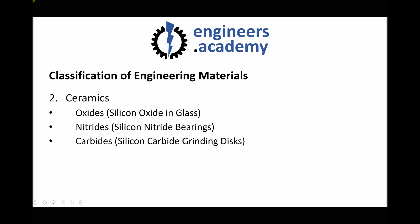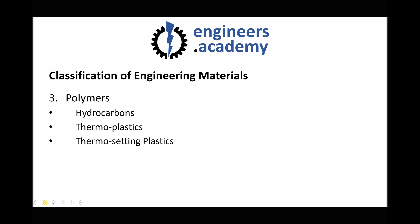Our next classification of engineering material is polymers. In layman's terms, polymers are often referred to as plastics. However, 'plastic' is the incorrect term in engineering because plasticity refers to a property — where a material deforms and doesn't return to its original state. So as engineers, we need to refer to things being made of polymers or polymer materials.